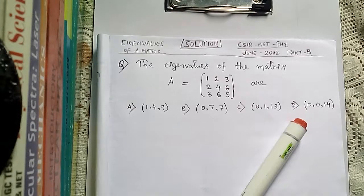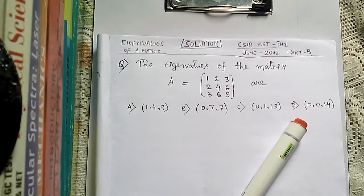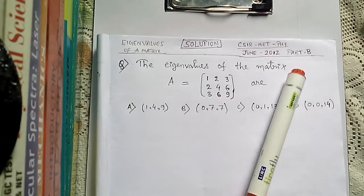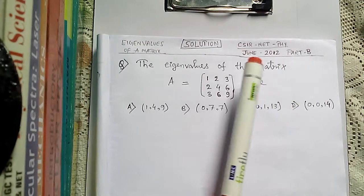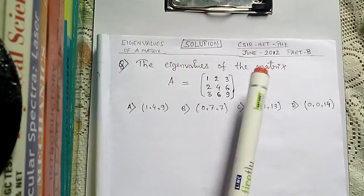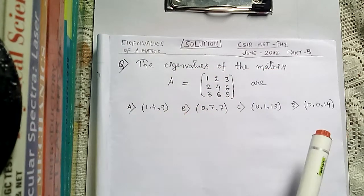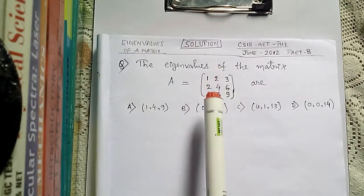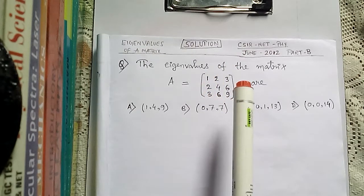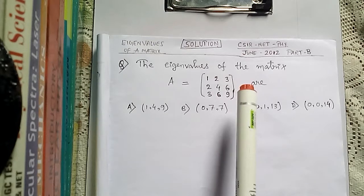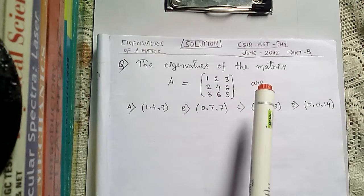Hey friends, this is Vidhan, welcome to my channel. Today we will solve a problem that asks to find eigenvalues of a matrix. It's from June 2012 Part B. It says the eigenvalues of matrix A are — which option is right? It's a square matrix of order 3x3, so it will have 3 eigenvalues, and that's why each option contains 3 eigenvalues.